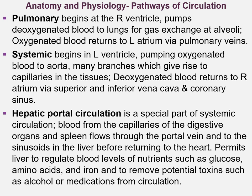Systemic circulation begins in the left ventricle, pumping oxygenated blood to the aorta and its many branches, which give rise to the capillaries in the tissue. Deoxygenated blood returns to the right atrium through the superior and inferior vena cava and the coronary sinus. Hepatic portal circulation is a special part of systemic circulation. Blood from the capillaries of the digestive organs and spleen flows through the portal vein to the sinusoids in the liver, allowing the liver to regulate blood levels of nutrients such as glucose, amino acids, and iron, and remove potential toxins such as alcohol or medications from circulation.